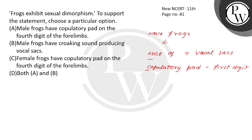Frogs exhibit sexual dimorphism. Male frogs can be distinguished by the presence of sound-producing vocal sacs, and also copulatory pads on the first digit of the forelimb. And this is absent in female frogs. Female frogs have copulatory pads on the fourth digit.